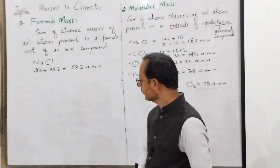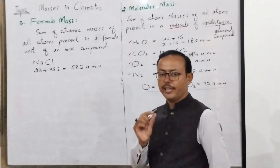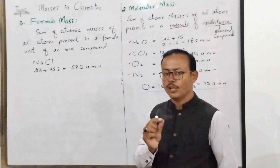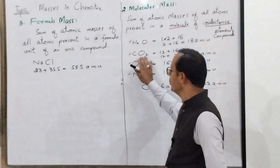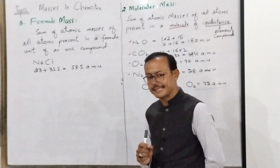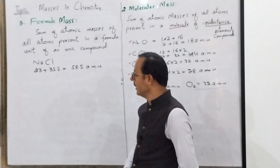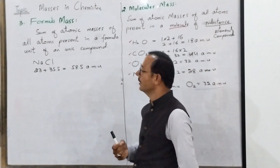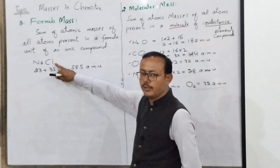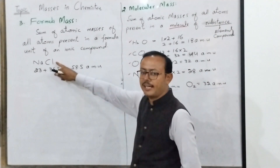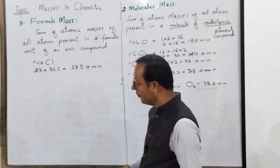Ionic compounds — their molecules are not independent. Ionic compounds — one particle, one unit cannot exist independently by itself. So we cannot call a unit of an ionic compound a molecule. What can we say instead?